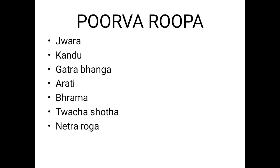Purva Rupa of Masurika: Jwara, Kandu, Gatrabhenga, Arati, Bhrama, Twachya Shotha, and Netra Roga.